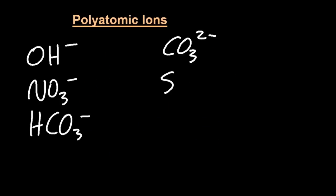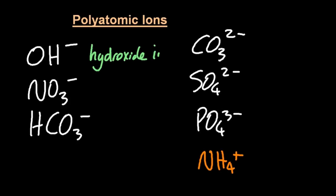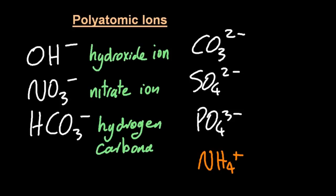Let me write out the ones you need to know according to the syllabus. OH minus is the hydroxide ion. NO3 minus is the nitrate ion, followed by HCO3 minus the hydrogen carbonate ion, and CO3 2 minus the carbonate ion.